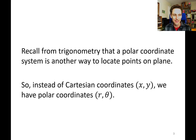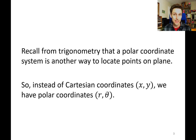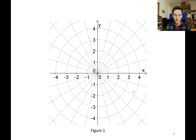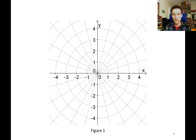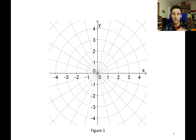Recall from trigonometry that a polar coordinate system is another way to locate points on a plane. Here, instead of using Cartesian coordinates, which are x and y, we have polar coordinates r and theta. In Figure 1, we have a picture of the polar coordinate system, where instead of grid lines at each x and y value, we have grid lines at each r value and each theta value.